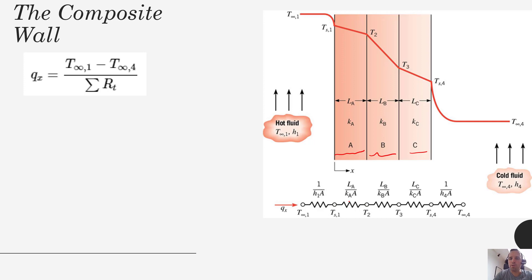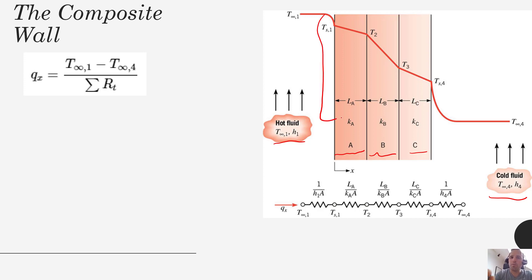We have three different materials, A, B, and C, through which heat has to conduct. And then we also have convection on the left-hand side with the hot fluid, and on the right-hand side with the cold fluid. As you can see, there is an overall temperature difference, with the temperature higher on the left, that's going to create a driving force all the way through as heat goes from left to right.